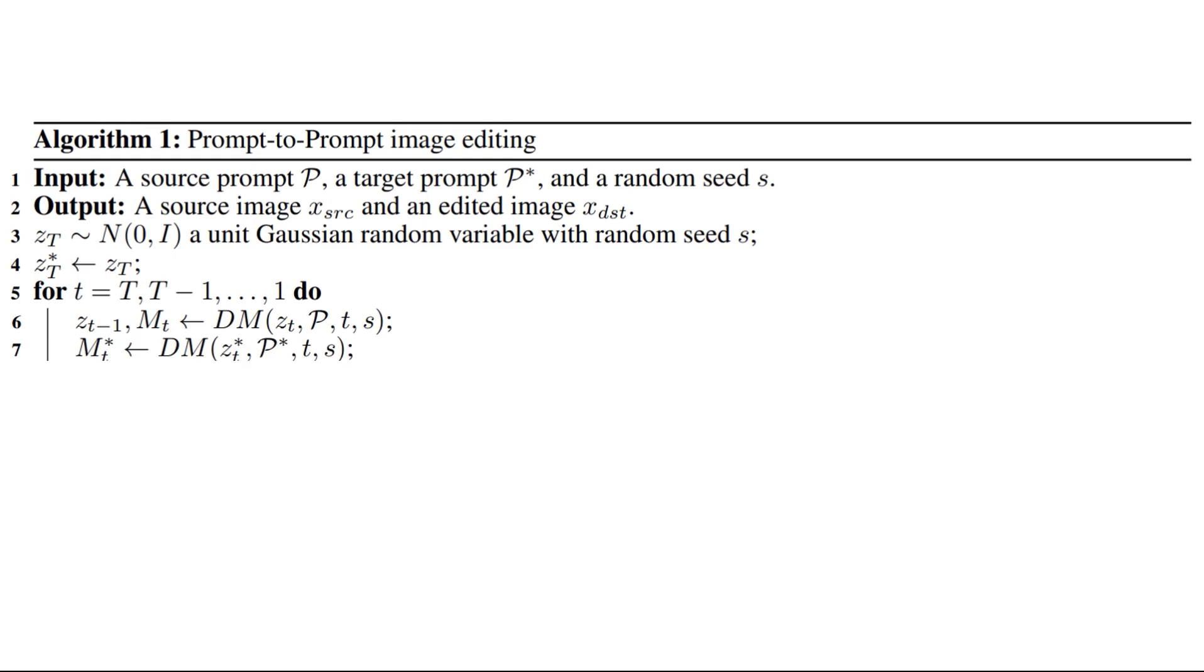We do the same thing for the edited image. The model is the same but now receives zt star and P star, which is for the edited image. The only output we care to get is the attention maps Mt star, because zt minus 1 by itself shouldn't have the same structure control.